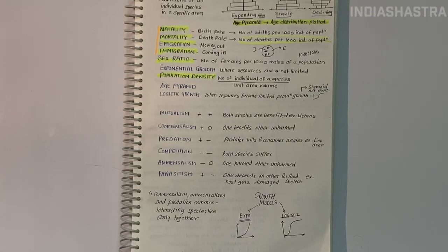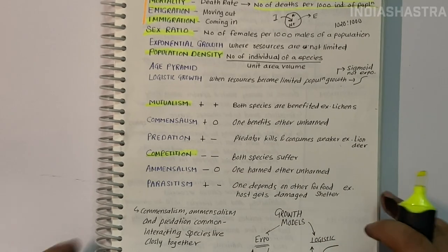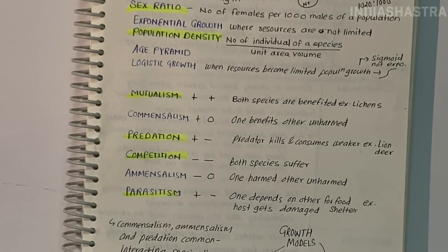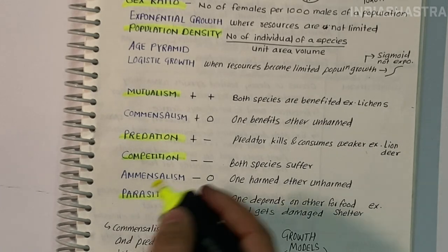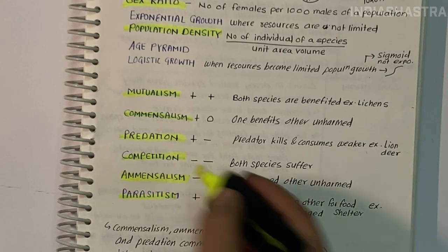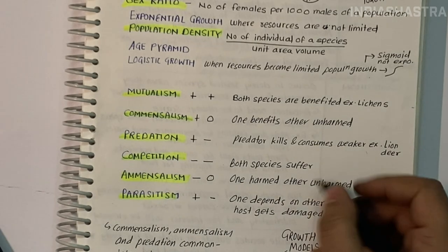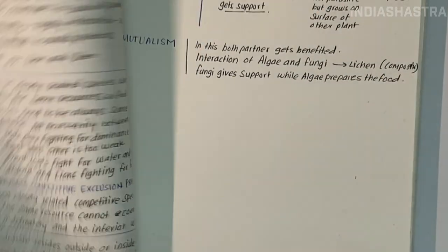Where both species benefit, it is mutualism. Where both are harmed, it is competition. In parasitism and predation, only one species benefits. Where one species benefits and the other is neither benefited nor harmed, it is commensalism. In amensalism, one species is harmed while the other is unaffected. Now let us discuss each in detail.